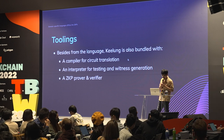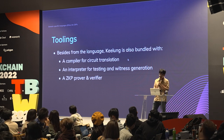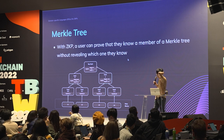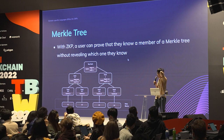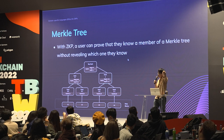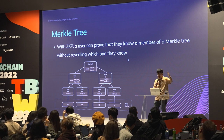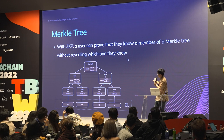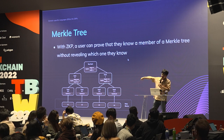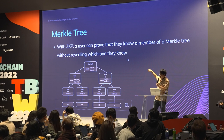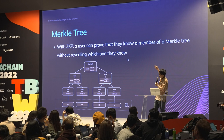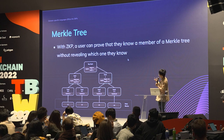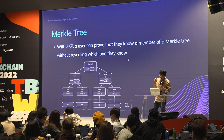I'm Victor, also an engineer at BTQ. A Merkle tree is a data structure built from a list of elements where each node at a level is a hash of two nodes in the next level. A list of four elements can be constructed into a Merkle tree with three levels. There will be a root hash representing the Merkle tree, and with zero knowledge proofs a user can prove they know a hash that is a member of the Merkle tree.